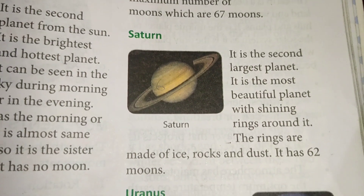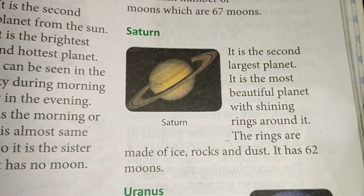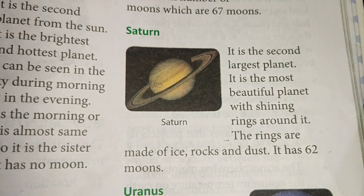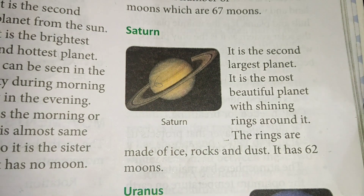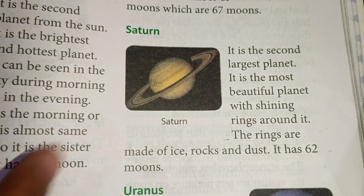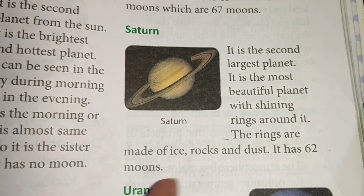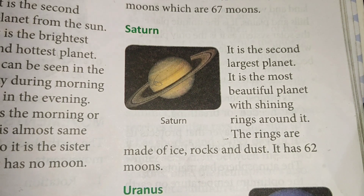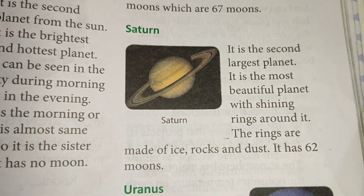Now we come to the 6th planet. Its name is Saturn. In Hindi we call it Shani. It is the second largest planet. It is the most beautiful planet, with shining rings around it. The rings are made up of ice, rocks and dust.